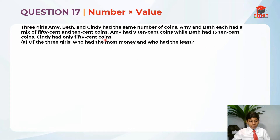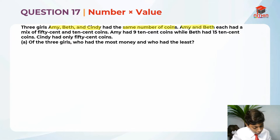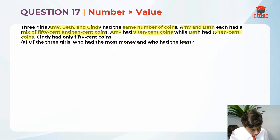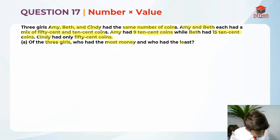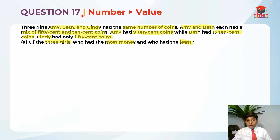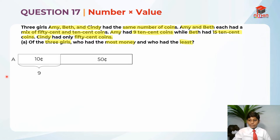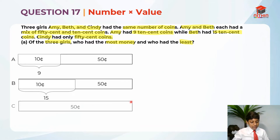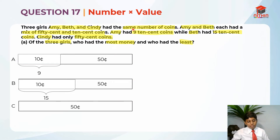So this is the question for part A. Since we have read the question, we should highlight the key information. So 3 girls, Amy, Beth and Cindy had the same number of coins. Now that we have read and highlighted the key information, we can draw the model. This is for Amy, this is for Beth, and this is for Cindy. Since Amy, Beth and Cindy had the same number of coins, all of the models are the same size.